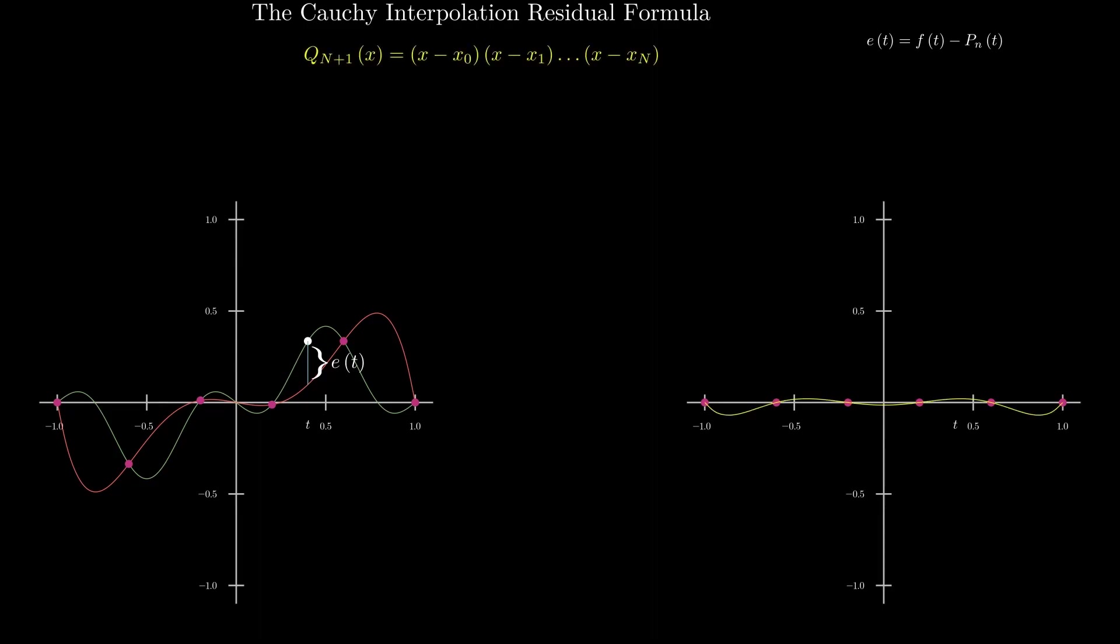It is an n plus 1 degree polynomial, q sub n plus 1, with roots at the old interpolation nodes. To form this, let's take the product of the monomials x minus x sub j for all the nodes x sub j.